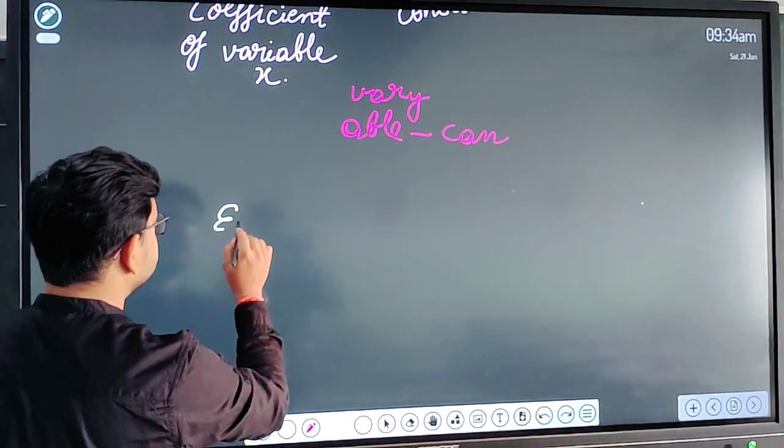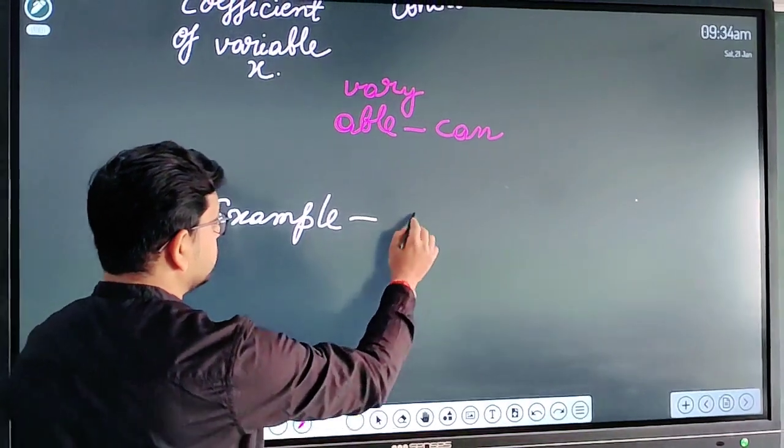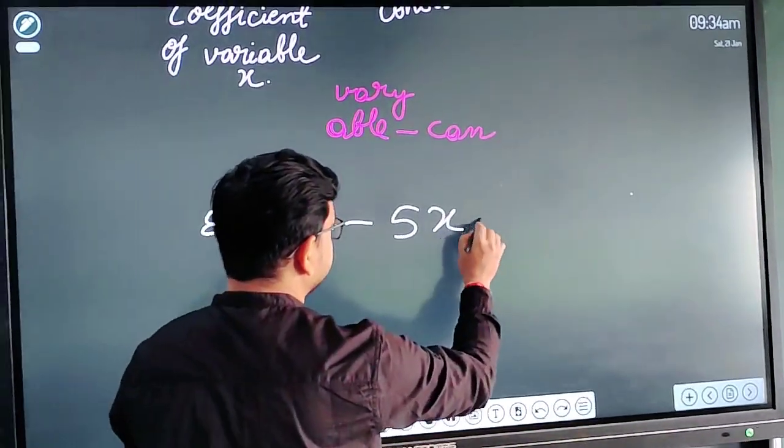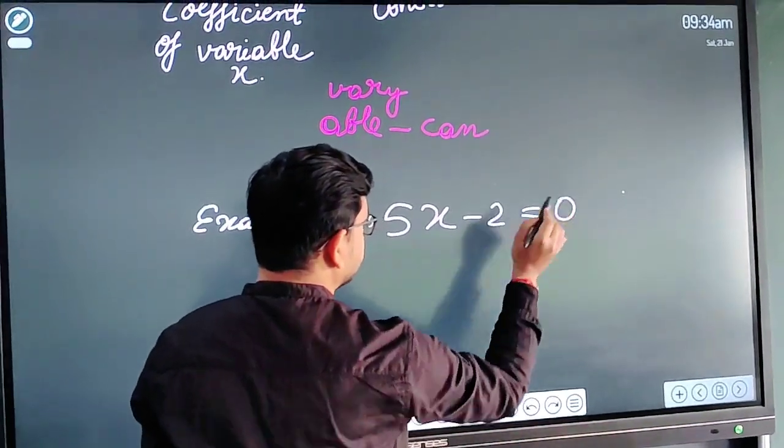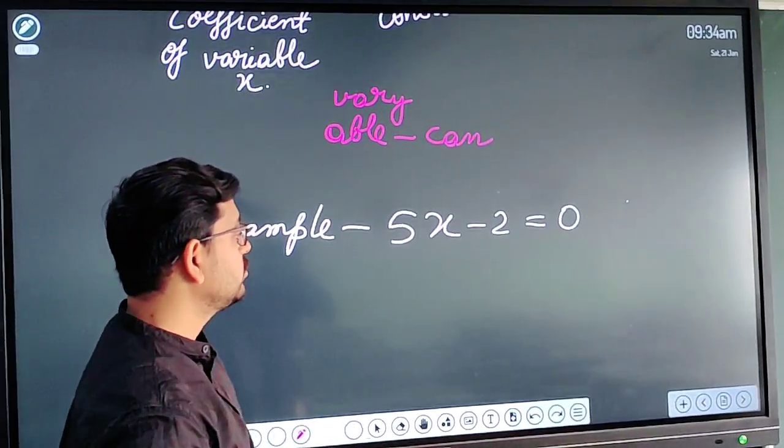So I will take one example. 5x minus 2 is equal to 0. So this is one equation and we have to find the value of x from this equation.